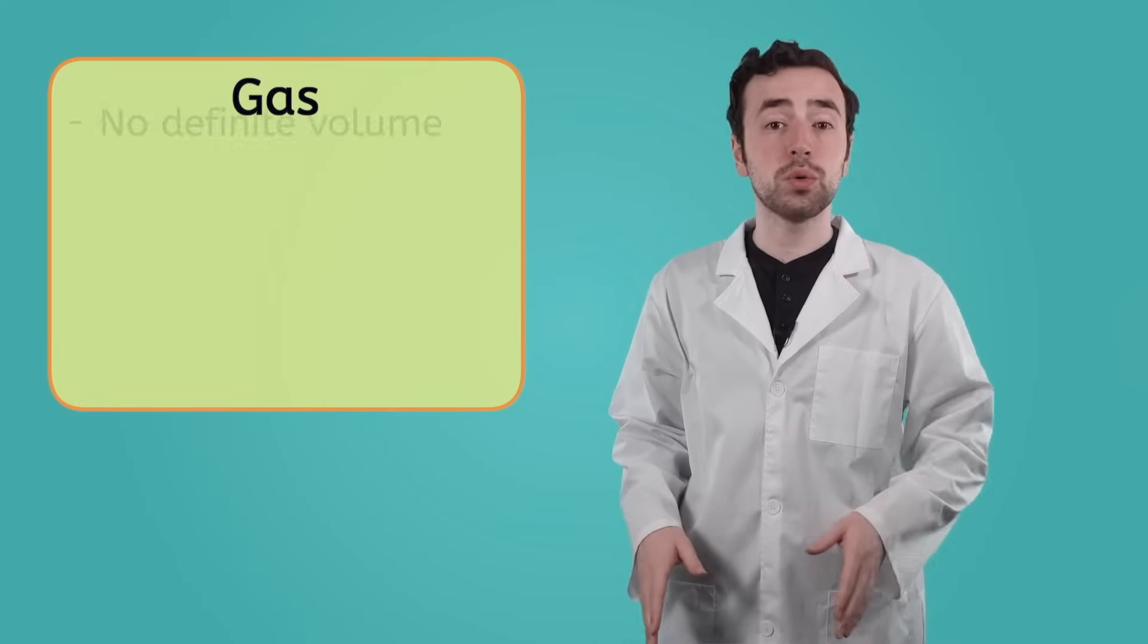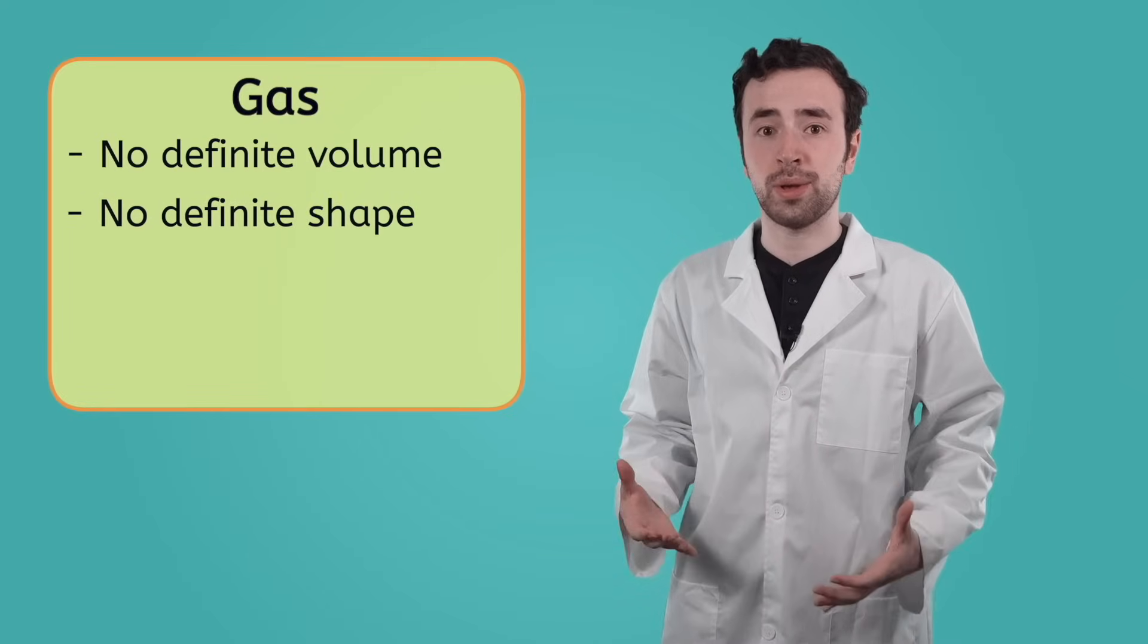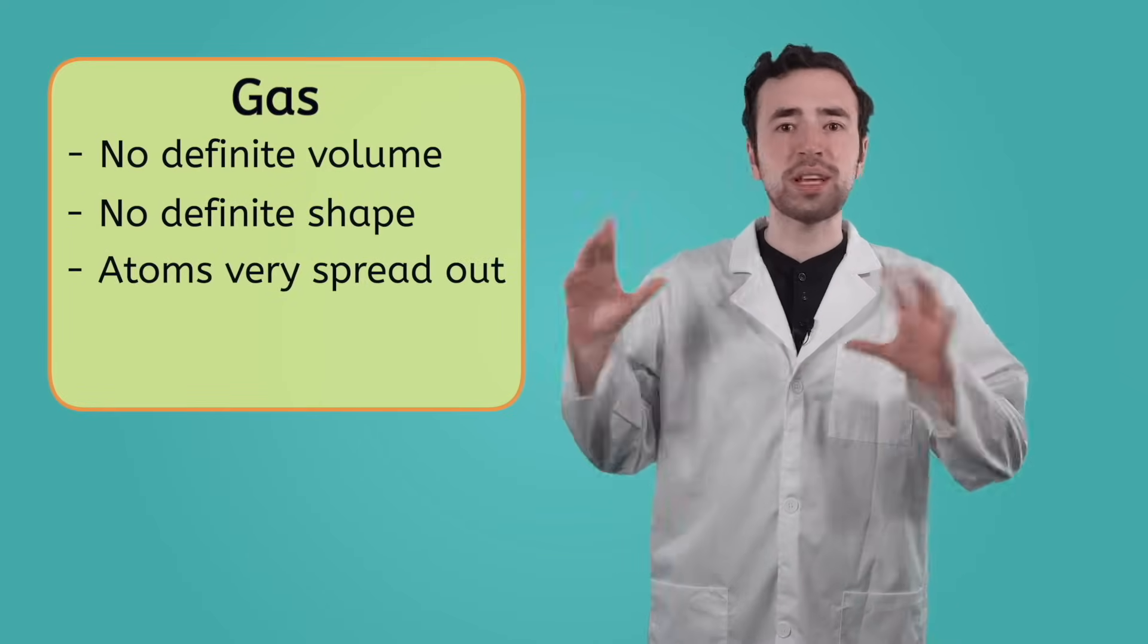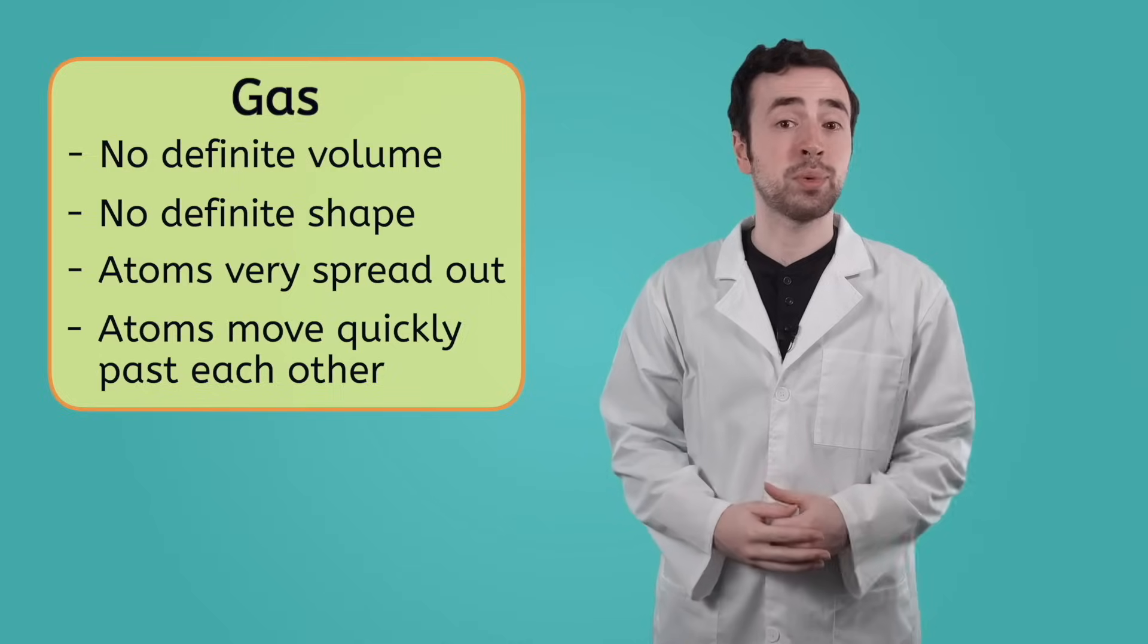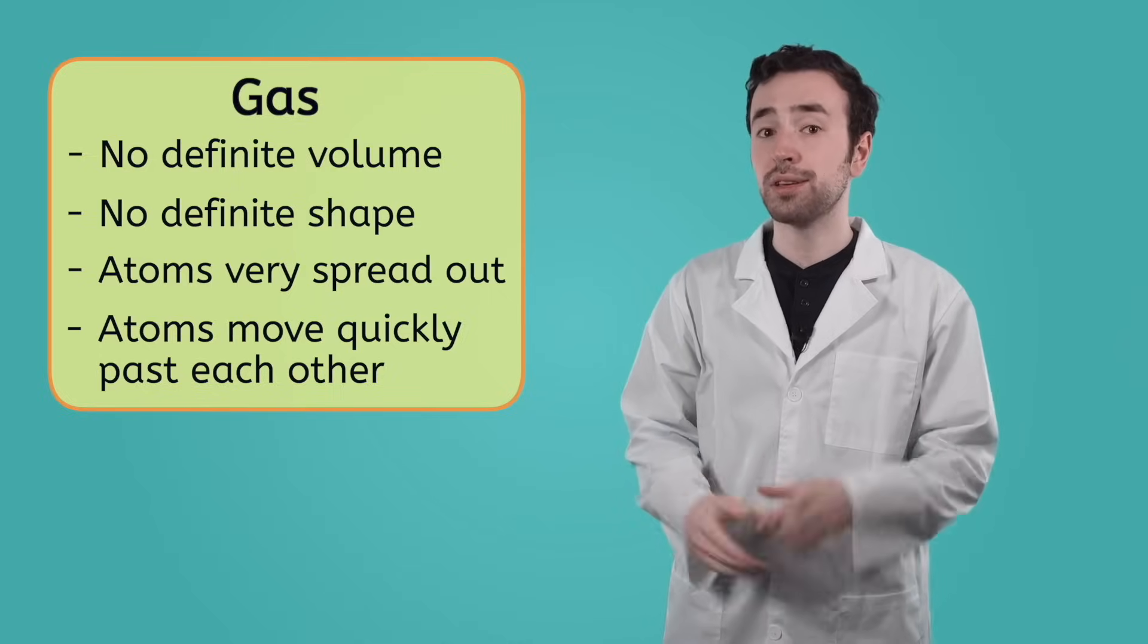So, gas has no definite volume or shape. Its atoms are all spaced out and moving around really quickly. Pause the video now to come up with some of your own examples of matter in the gas state in your guided notes.